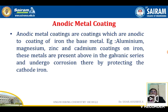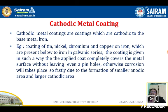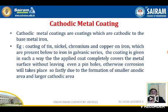Cathodic metal coatings are coatings which are cathodic to the base metal iron. This means you take any metal present below iron in the electrochemical series and coat iron with it. Examples include tin, nickel, chromium, and copper. Coating iron with these metals is called cathodic metal coating, as they are present below iron in the galvanic series.